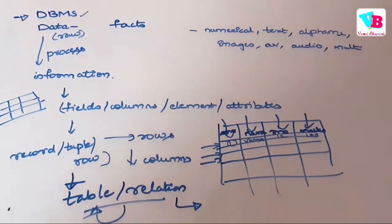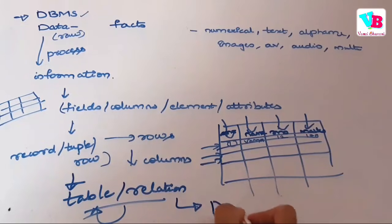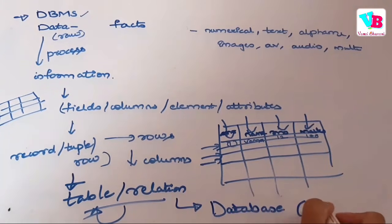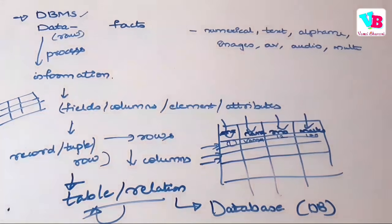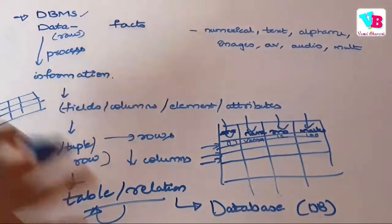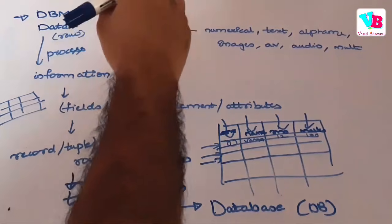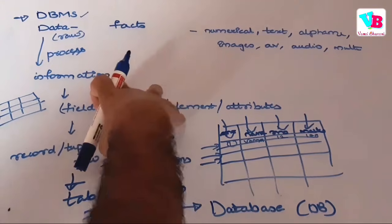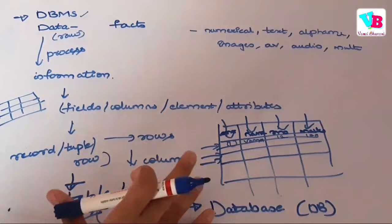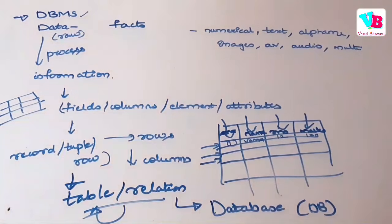The collection of these tables or relations is what is called a database. A database is abbreviated as DB. Several tables together form a single structure, and that structure is called a database.